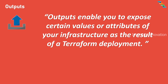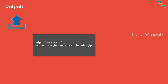Next we will see about the output block. Outputs enable you to expose certain values or attributes of your infrastructure as a result of a Terraform deployment. Output values can be used to provide information to users, pass data between Terraform configurations, or integrate with external systems. The output name is the identifier you choose — it should be unique within your configuration and follow naming conventions. The output block contains a value argument which specifies the value to be exposed, and you can assign a static value or reference other resources, data sources, or variables.